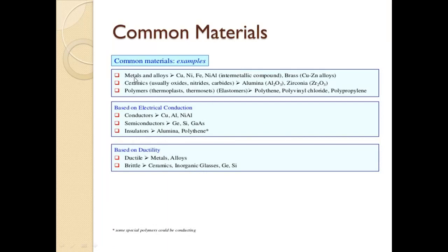The common material examples are as follows. First, metals and alloys — copper, nickel, ferrous, aluminum, brass, etc. Then ceramics, which are usually oxides, nitrides, and carbides — such as alumina and zirconia. Next are polymers, which include elastomers, polyethylene, polyvinyl chloride, polypropylene, etc.